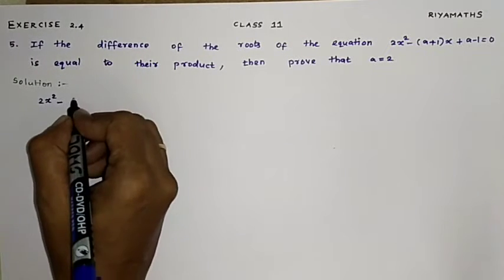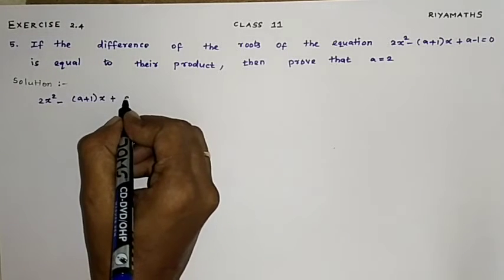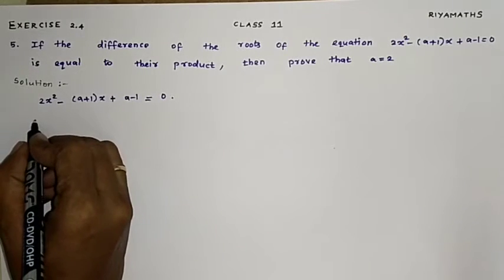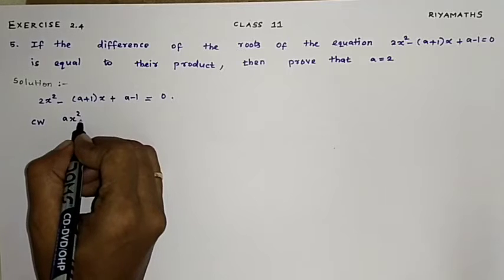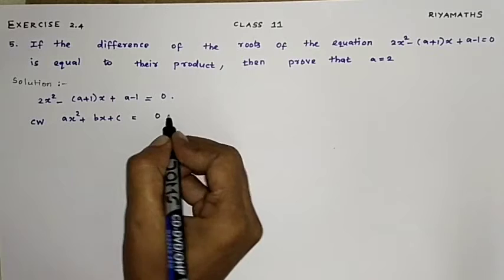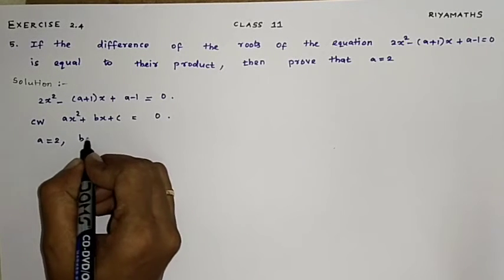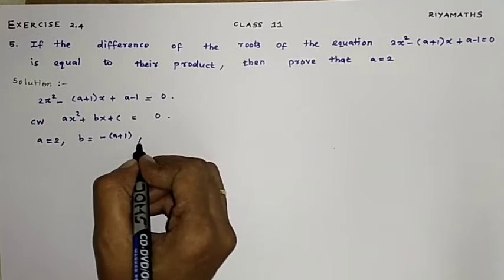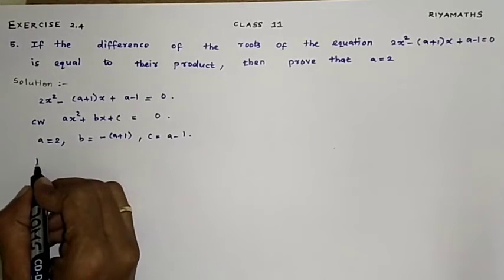The equation is 2x² minus (a+1)x plus (a-1) equals 0. We compare this with the general quadratic equation Ax² + Bx + C = 0. So the value of A is 2, B is minus of (a+1), and C is (a-1).